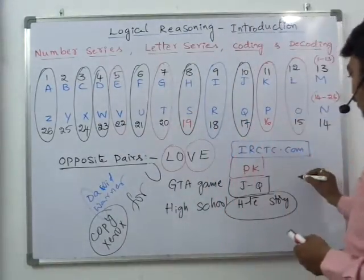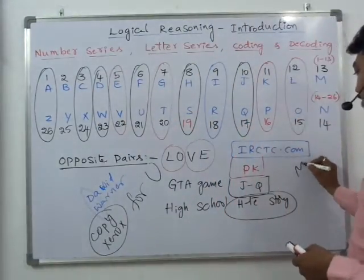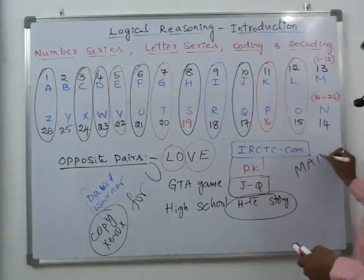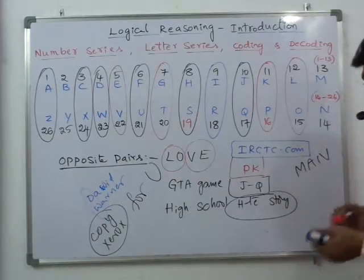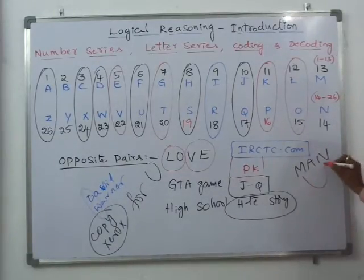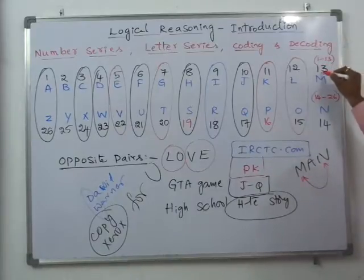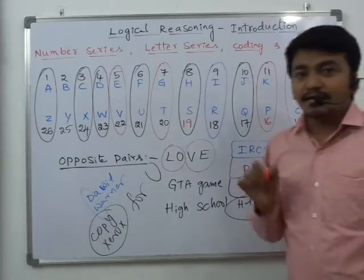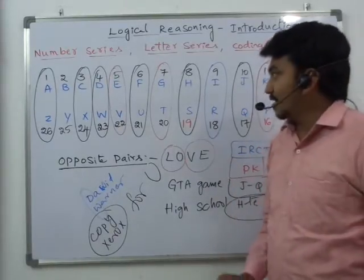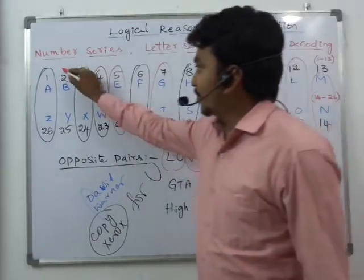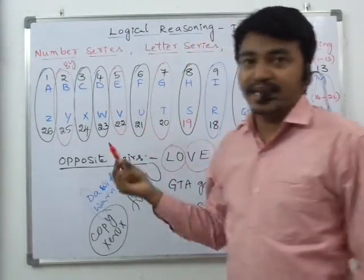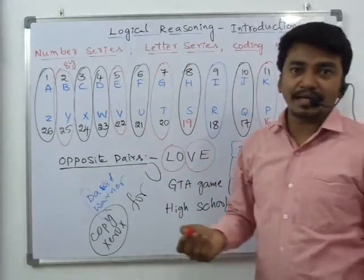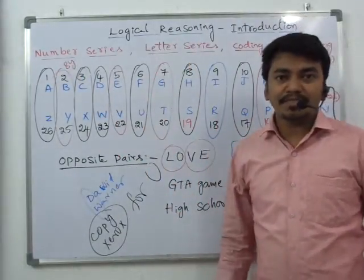If you can remember the word MAN — the first and last letters M and N form a pair. And last but not least, remember the English word BY — B and Y form a pair. Hope you guys understood the opposite pairs.